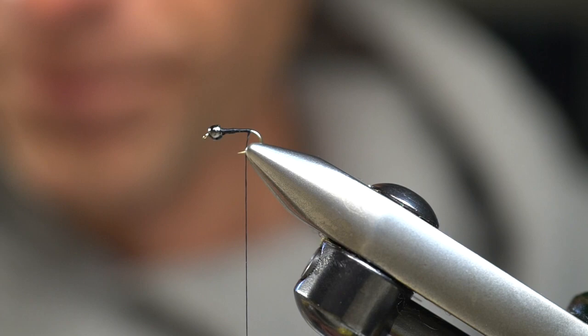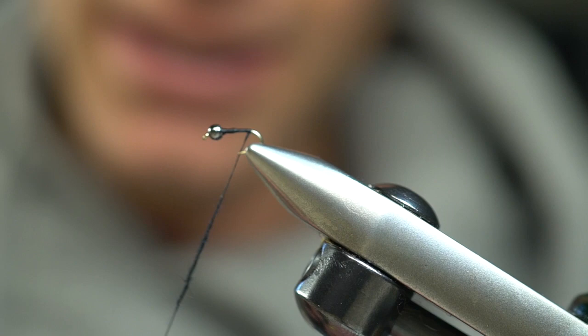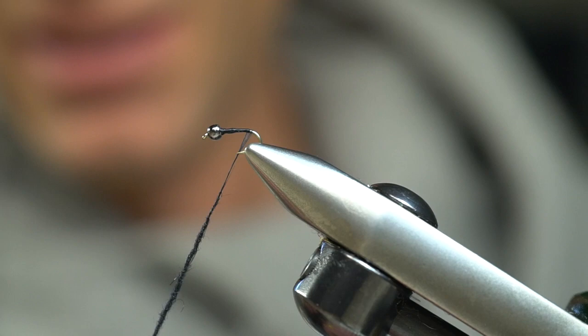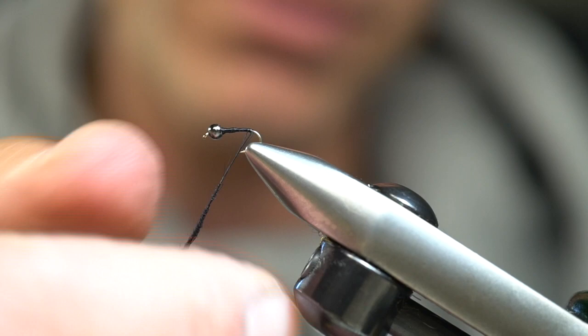We're going to create a ball of dubbing for the rear abdomen on this ant. You can use any dubbing. Recently I've been using some of this Wopsy spiky squirrel dubbing in black. What I like about this dubbing is once you catch a couple of fish, these guard hairs will kind of start popping out.